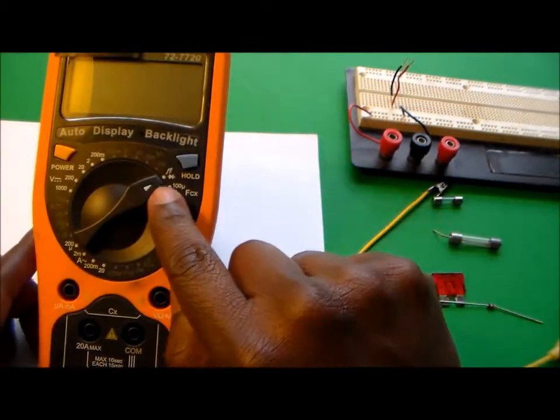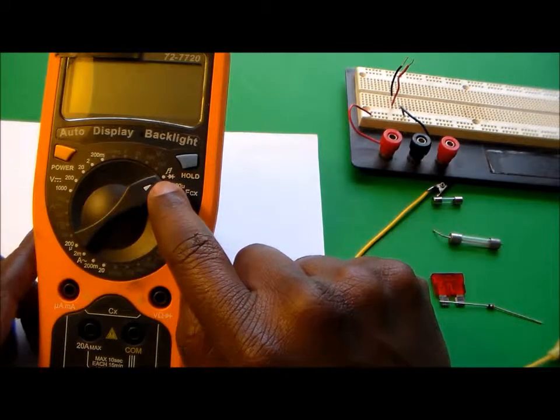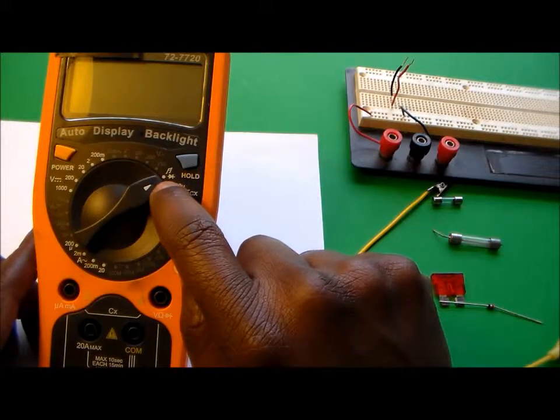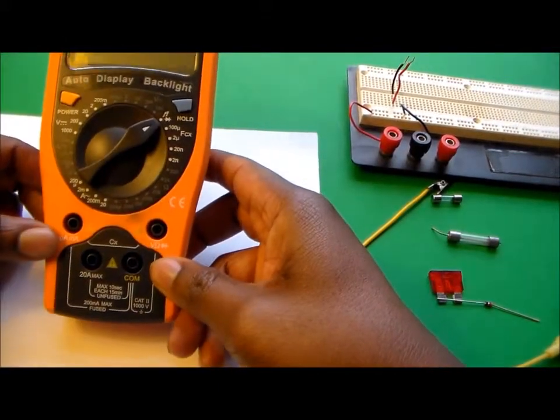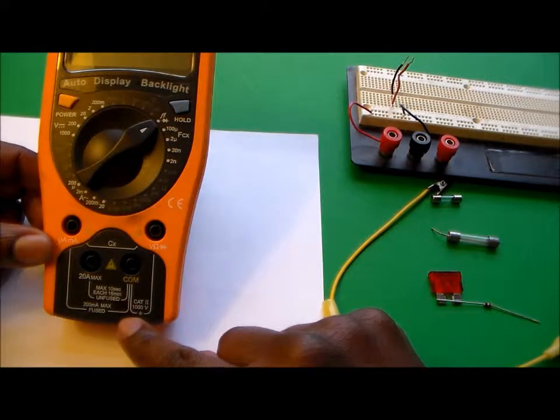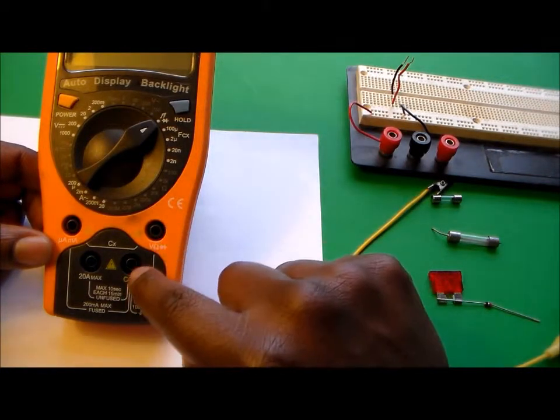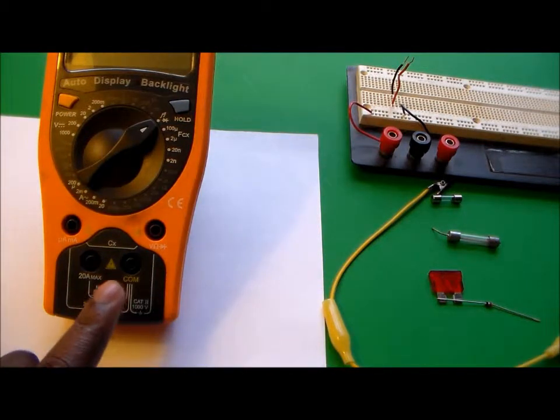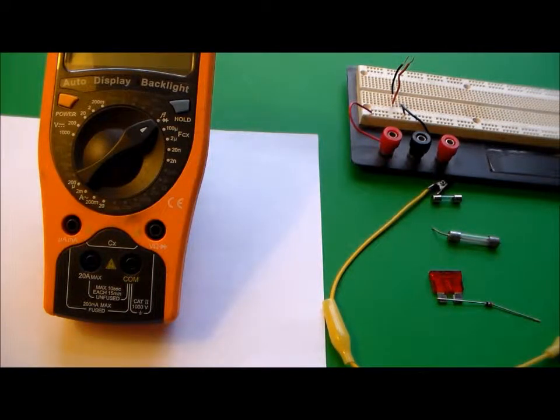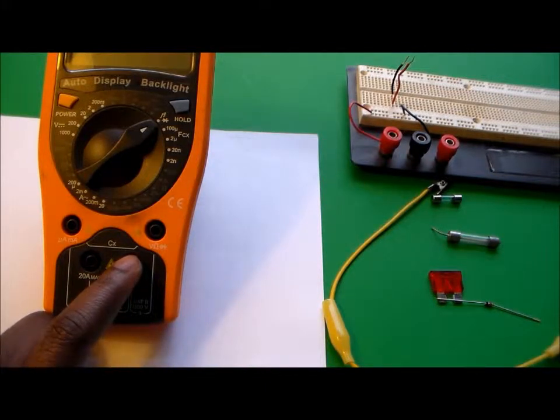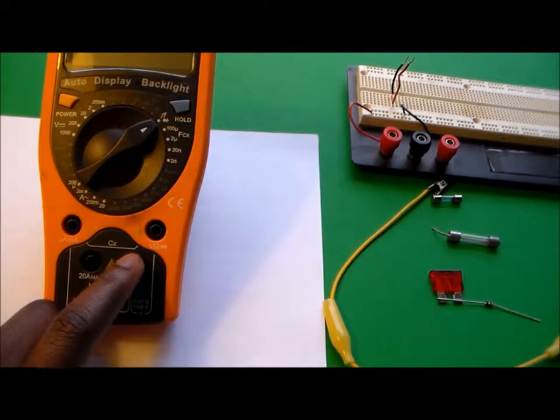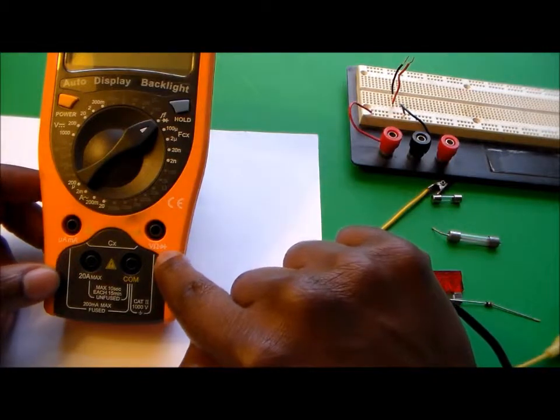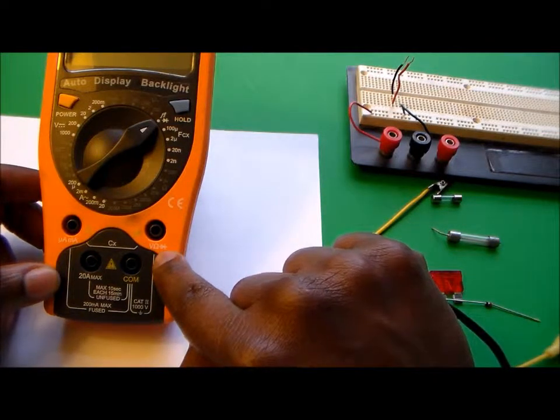Make sure that dial is turned towards the continuity slash diode tester and you want to make sure that your cables are connected to your multimeter in the right location. Make sure the black wire is connected to the common and the red wire is connected to your continuity tester. In this case it just shows diode but it's a diode slash continuity tester.